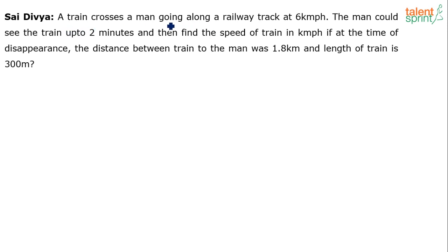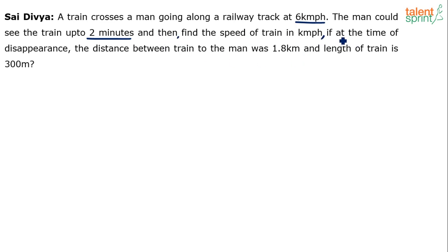The speed of the man is 6 kilometers per hour. The man could see the train up to 2 minutes. We have to find the speed of the train in kilometers per hour. At the time of disappearance, the distance between the train and the man was 1.8 kilometers, and the length of the train is 300 meters.